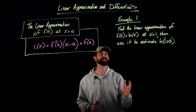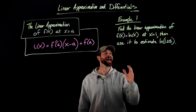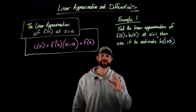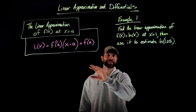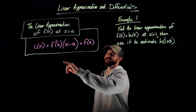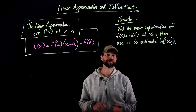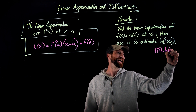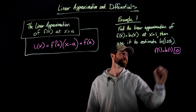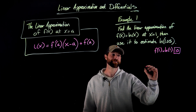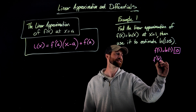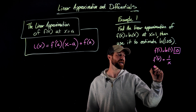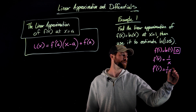In the first example, we're asked to find the linear approximation of f of x equals the natural log of x at x equals 1, and then use that to estimate the natural log of 1.05. Our a value is 1. We evaluate f of 1: the natural log of 1 is 0. Then we find the first derivative — f prime of x for the natural log of x is simply 1 over x. So f prime of 1 is 1 over 1, which is simply 1.